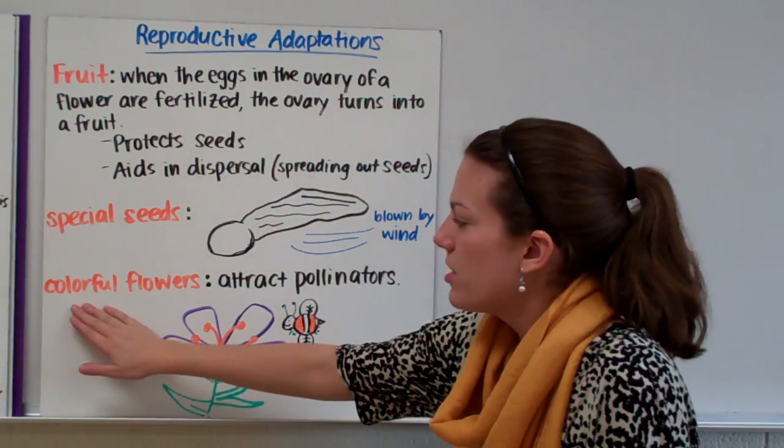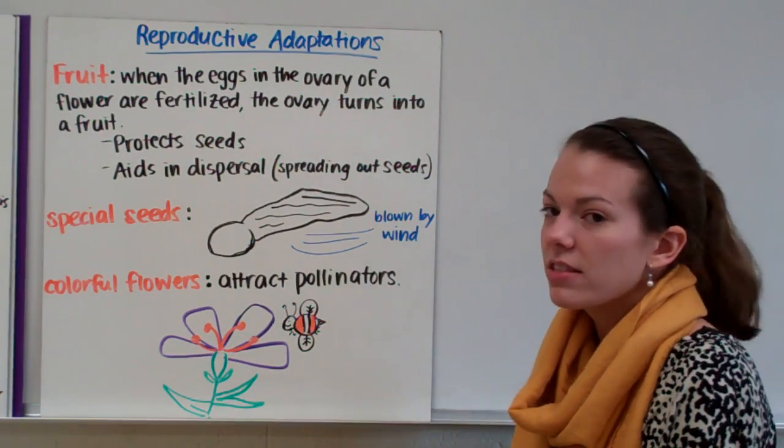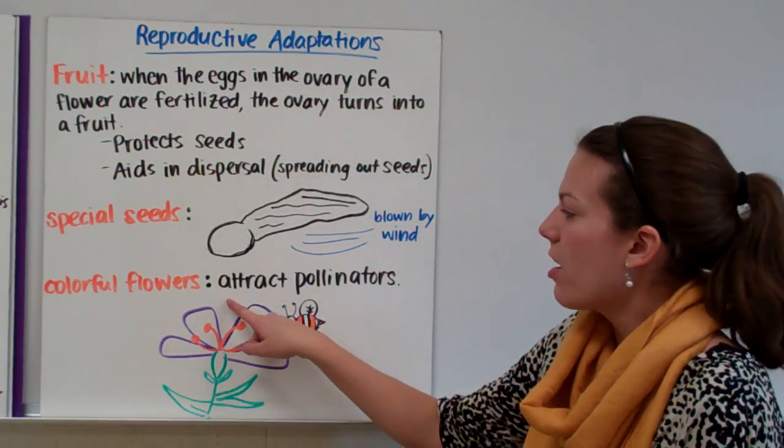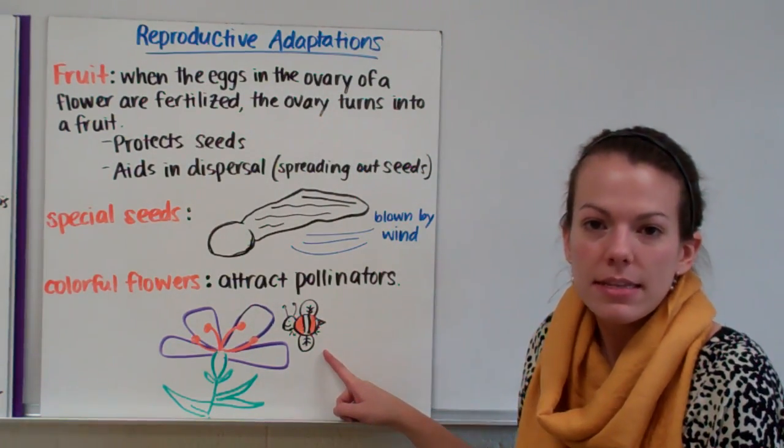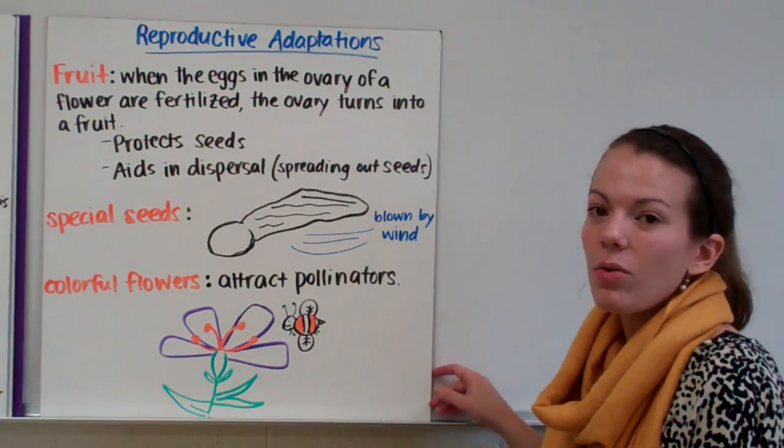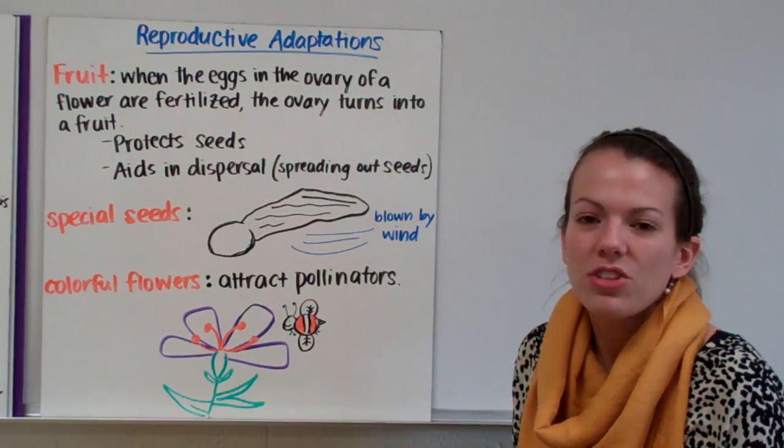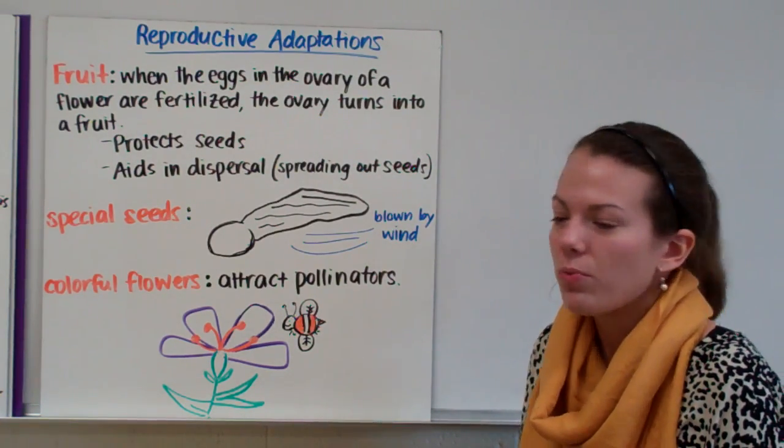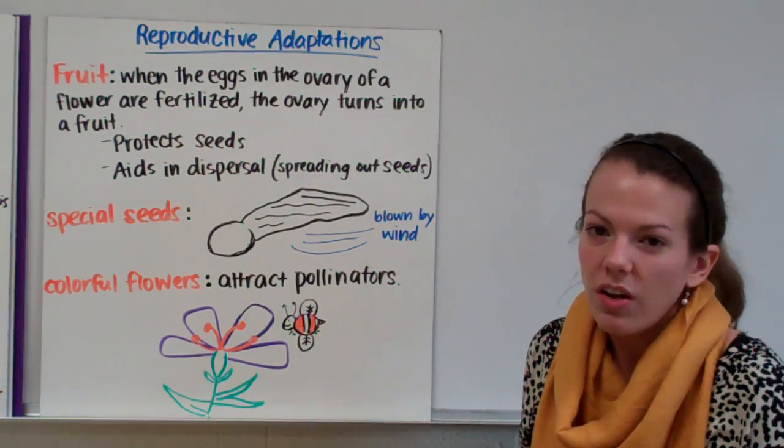And then another reproductive adaptation are colorful flowers. Now flowers that are pollinated by insects tend to be very colorful. Because that color helps to attract pollinators like bees and birds and other insects. And so this flower is very colorful. But if a flower is pollinated by the wind it tends not to be as colorful. Because no one needs to attract the wind. The wind is going to blow regardless if the flower is beautiful or dull looking.